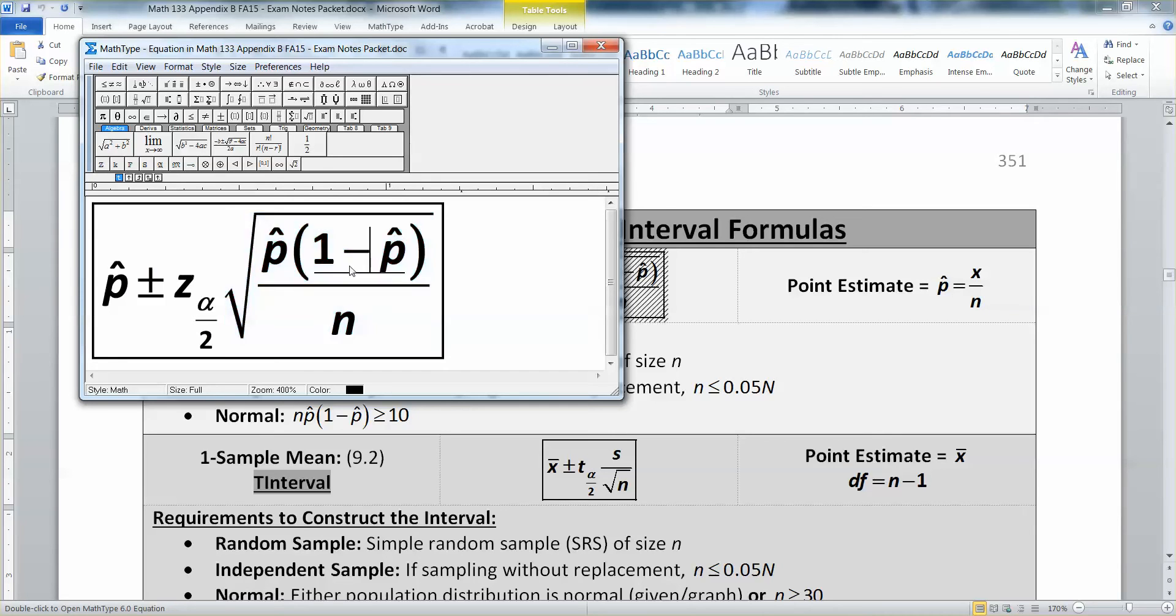If you recall, we've seen that formula before. It was from section 8.2, it was the approximation for the standard deviation of the sampling distribution of sample proportions.